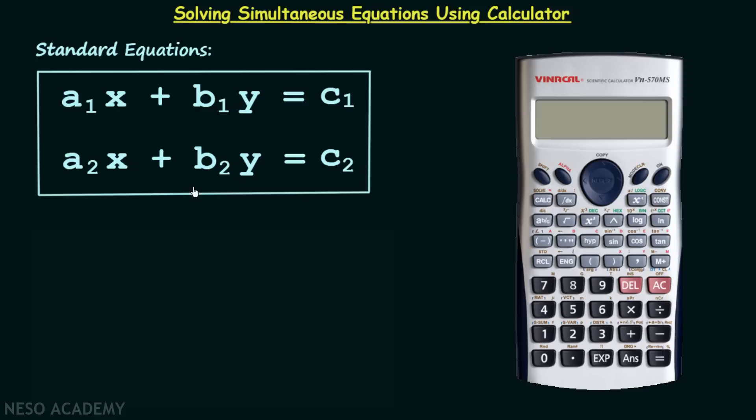In the second equation x and y are the unknowns, a₂, b₂, and c₂ are the constant values. a₂ is the coefficient of x and b₂ is the coefficient of y.